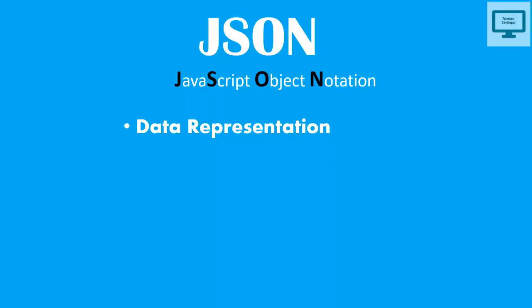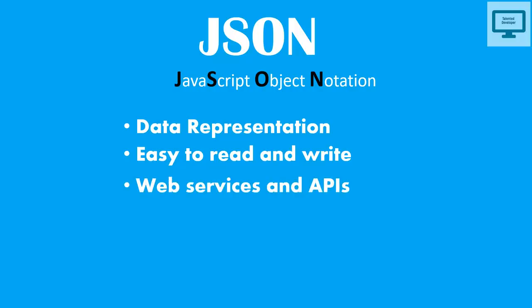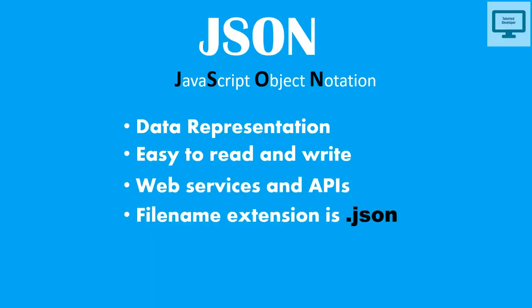JSON stands for JavaScript Object Notation. It is simply a data representation format, very similar to XML. It is easy to read and write because it is nicely integrated with JavaScript, and JSON is a superset of JavaScript. Nowadays every web service and API is using JSON because it is very lightweight and small in size. Every language has a library or built-in function to parse JSON — a string into objects or classes. JSON can have a file extension of dot JSON.